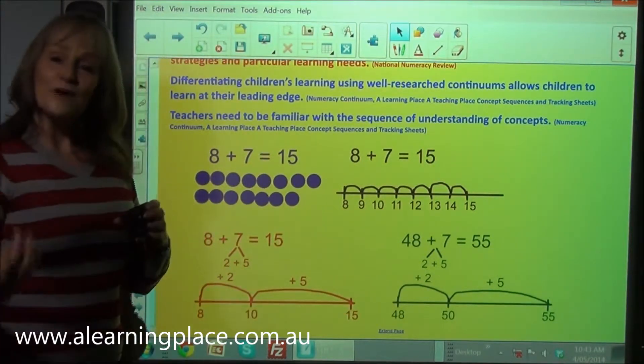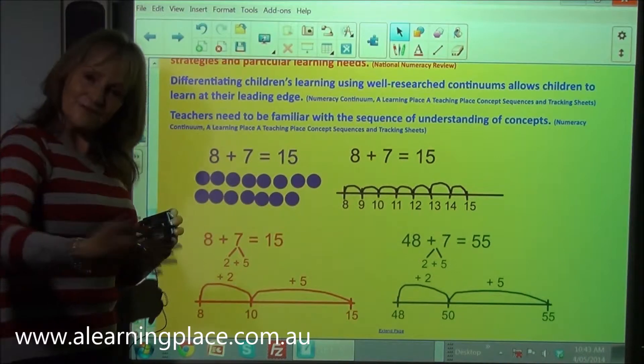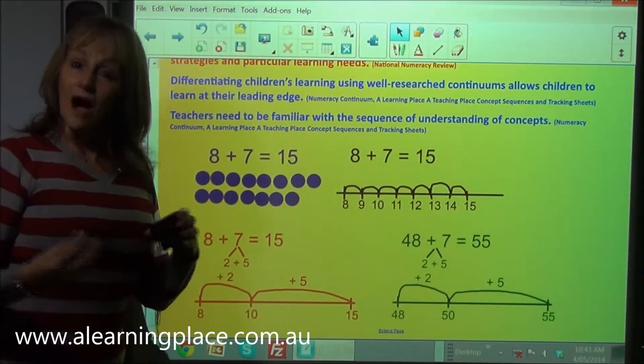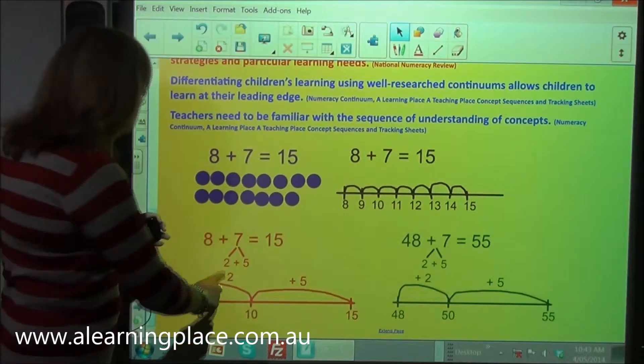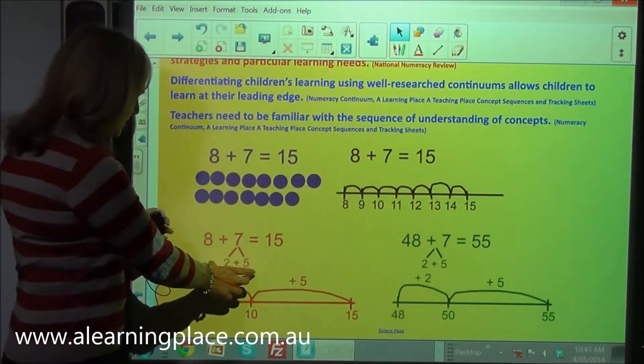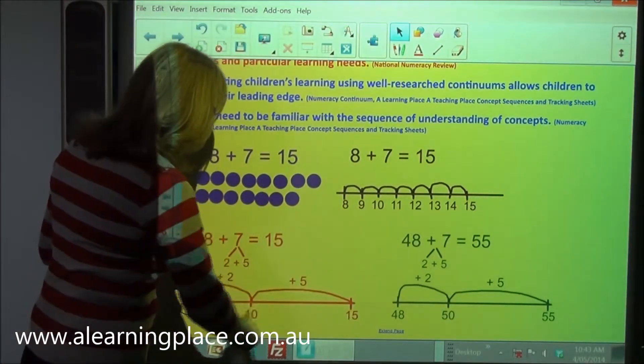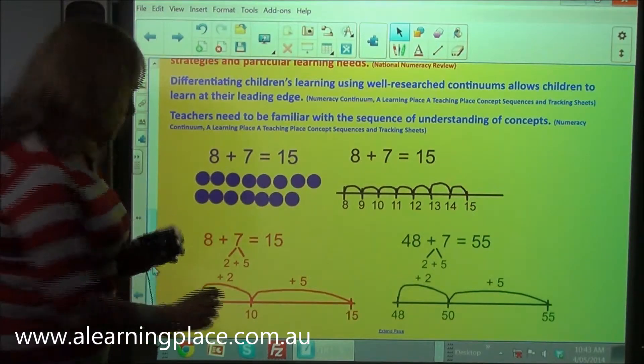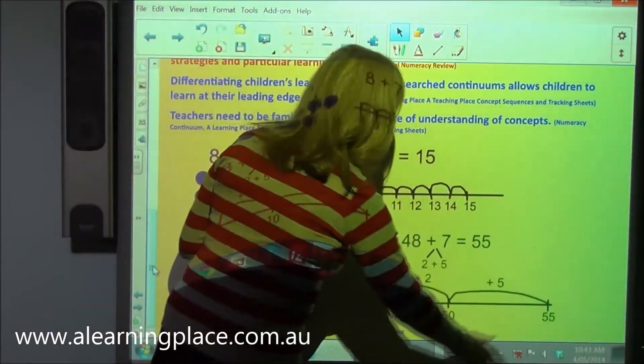Now who started from one of the numbers but didn't count by ones? What did you do? Oh you started from eight, what did you do then? You added two, why did you add two? Oh because eight and two are friends of ten so we landed on ten. What did you do then? Oh you found that you had already added the two now you have to add the five so you partitioned your seven into two and five. What did you do then? You added the five, so what does ten plus five equal? Oh it equals fifteen, how do you know? Because fifteen is ten and five, fabulous.